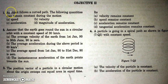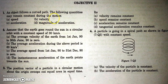Let's start with question number 1. An object follows a curved path; the following quantities may remain constant during the motion. Obviously, speed can be constant — yes, in uniform circular motion. Velocity — no, because the direction of motion will change as the path is curved.